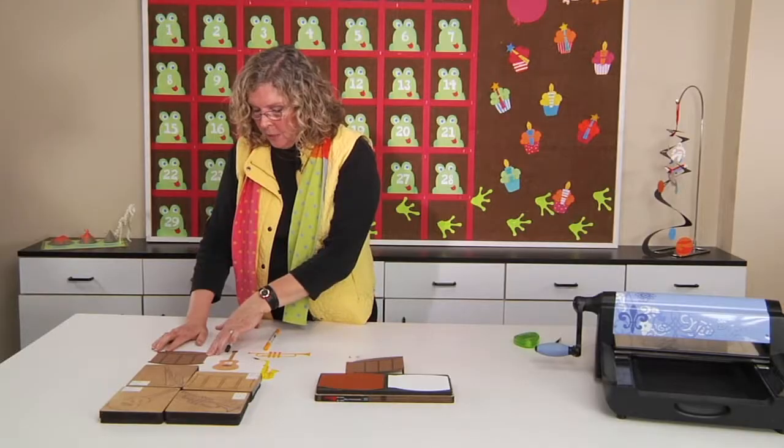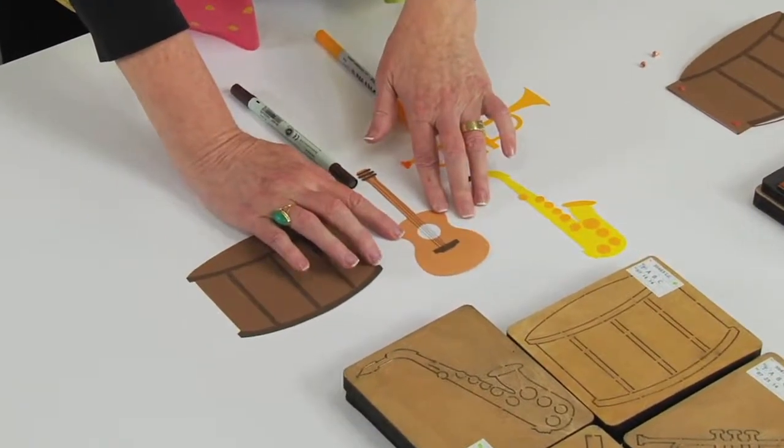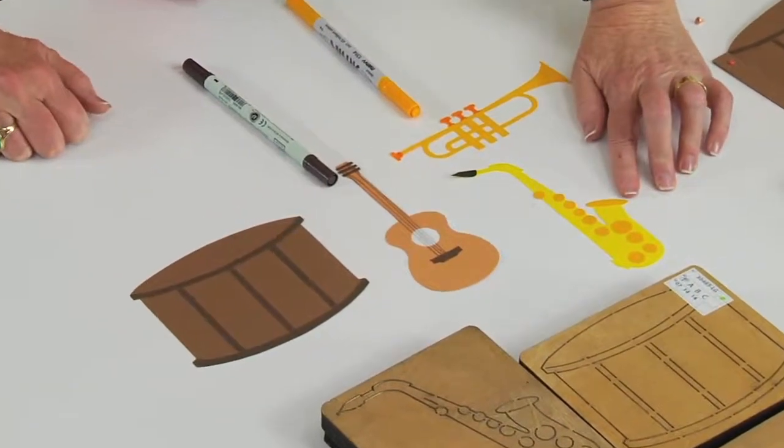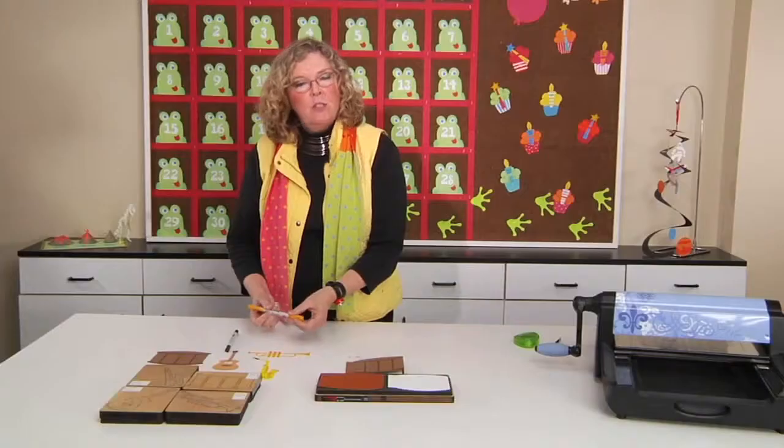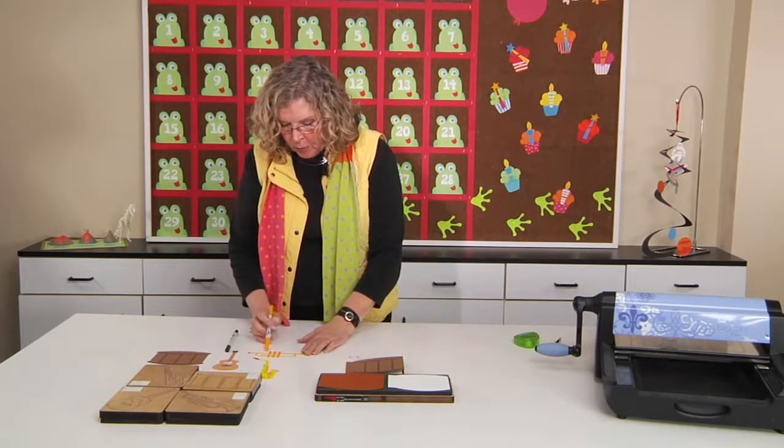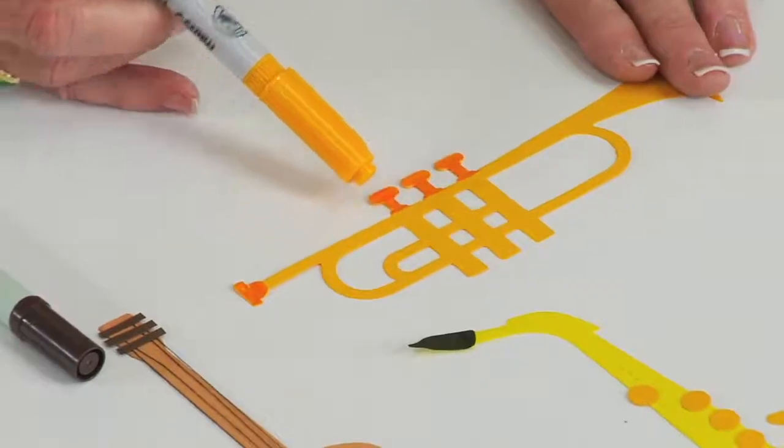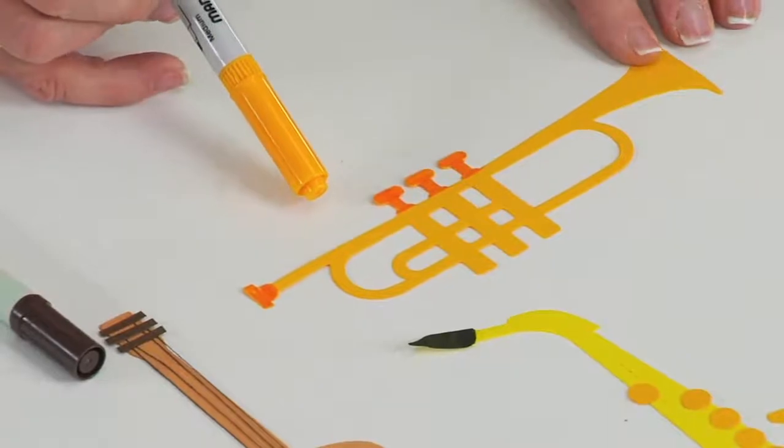Here is the drum, here is the guitar, and then there's a horn that's the saxophone and a horn that's the trumpet. And what I did was I used just a different technique to decorate each one. For the trumpet, I just used a deeper shade of a marking pen in order to highlight some of the details.